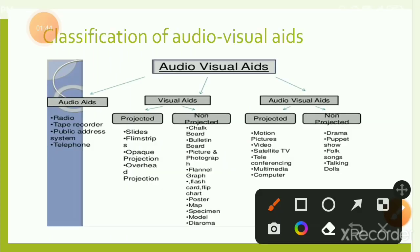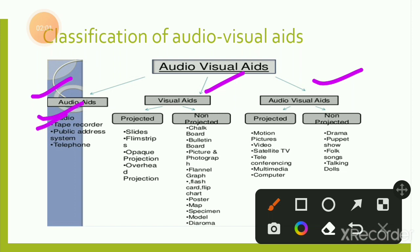Classification of audio-visual aids: the first category is audio aids, second is visual aids, and third is both audio-visual aids combined. Audio aids are those which we can only hear — the message is conveyed through sound. Examples include radio, tape recorder, public address system (mic), and telephone.